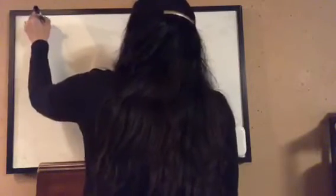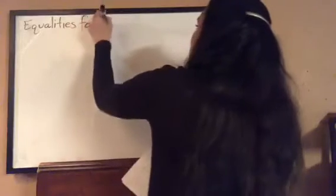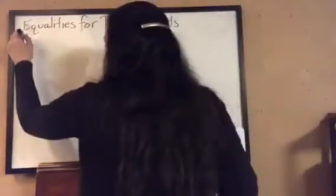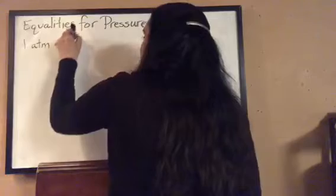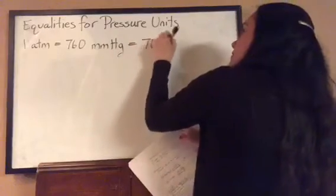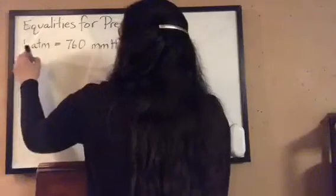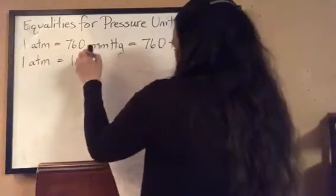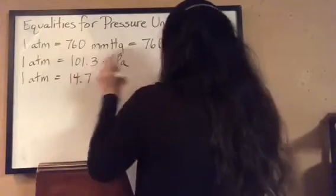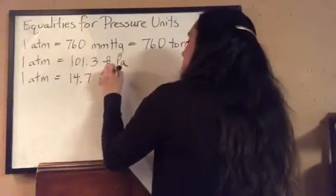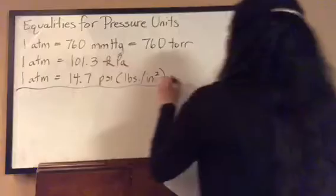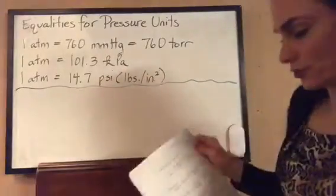Let's look at the equalities for pressure units. One atmosphere is equivalent to 760 millimeters of mercury — the millimeters of mercury unit and the torr are exactly the same. One atmosphere is equivalent to 101.3 kilopascals. And one atmosphere is equal to 14.7 psi, or pounds per square inch — you may see it written either way.